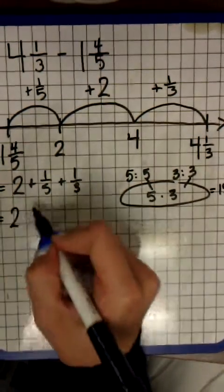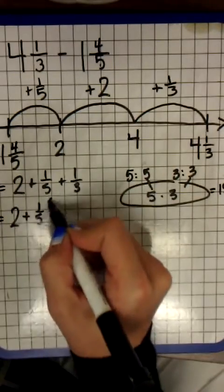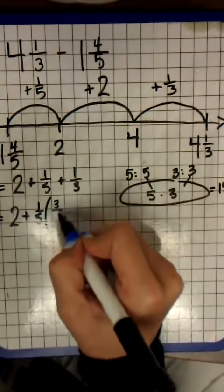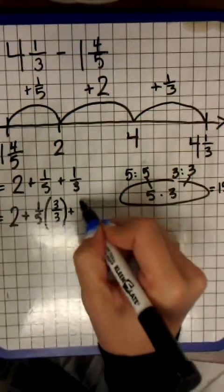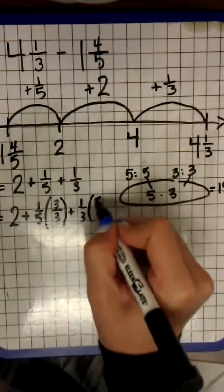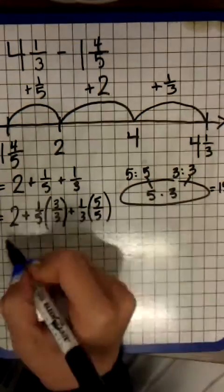So now I'm going to rewrite my problem. Two plus one fifth. One fifth I would multiply by three thirds to get a common denominator of fifteen. And one third I would multiply by five fifths because I know that three times five would give me fifteen.